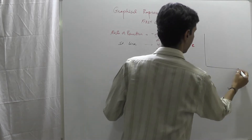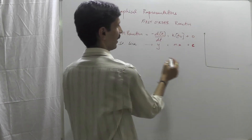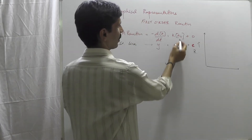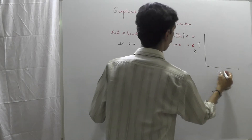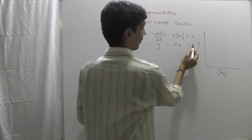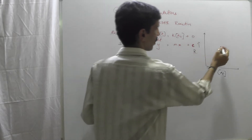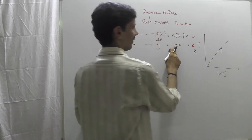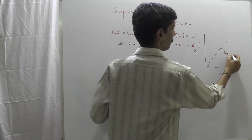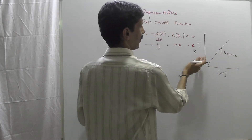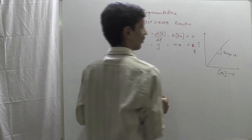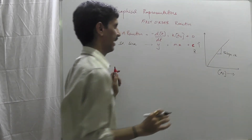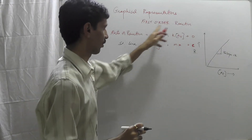When we plot the graph, Y is nothing but the rate of the reaction, and X is nothing but [A]t, that is the concentration of the reactants. C is the intercept, which is equal to 0. So that means it is a straight line passing through the origin. The slope M is equal to K. So the rate of the reaction plotted against the concentration of the reactant gives a straight line passing through the origin, and slope equals K.